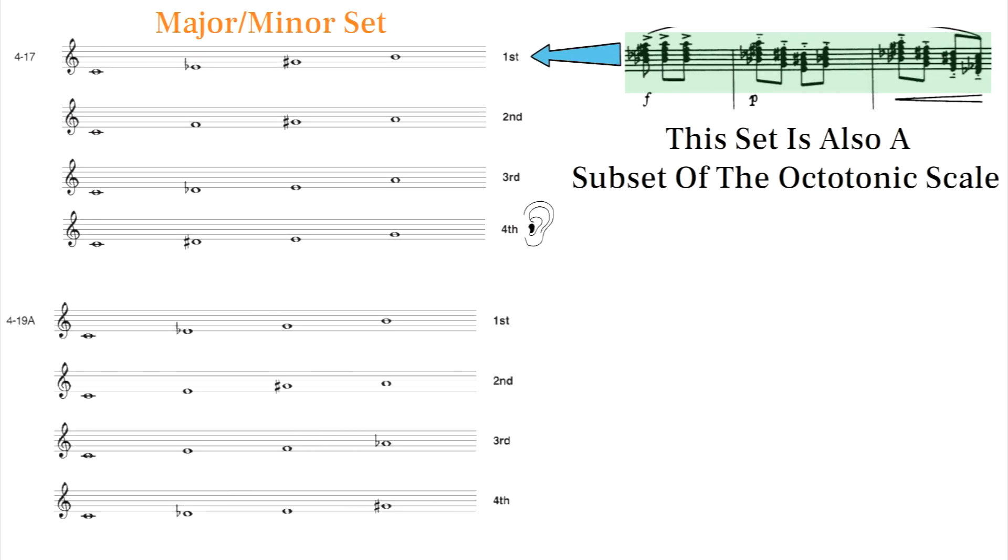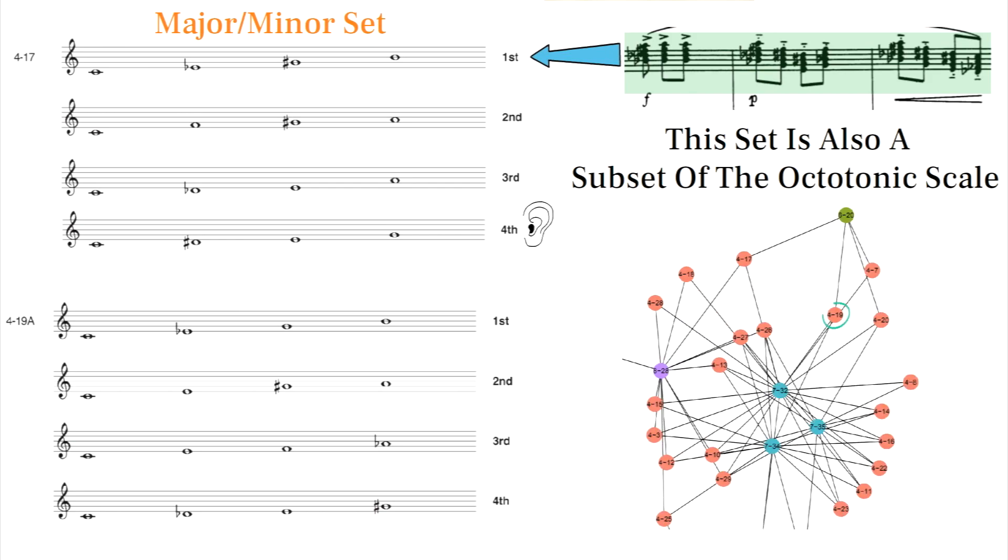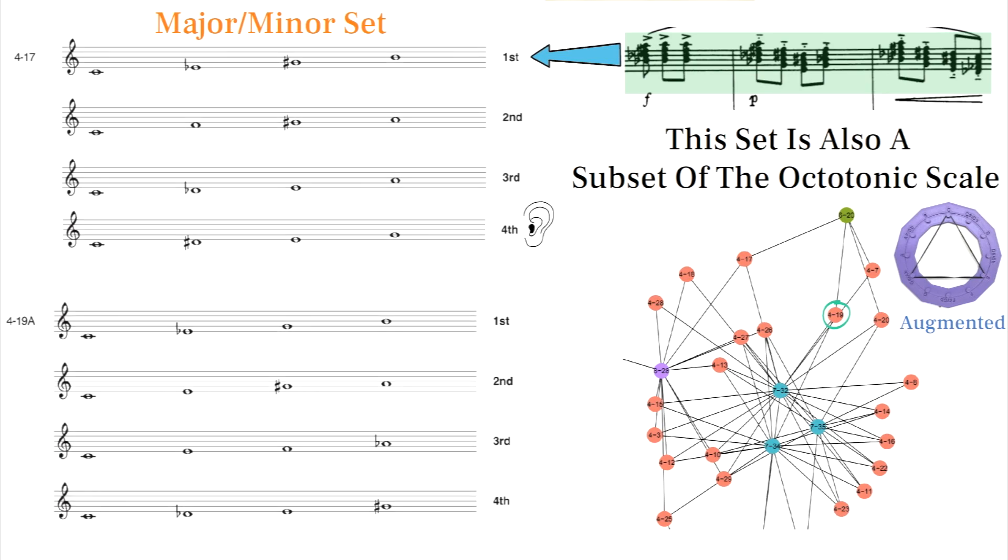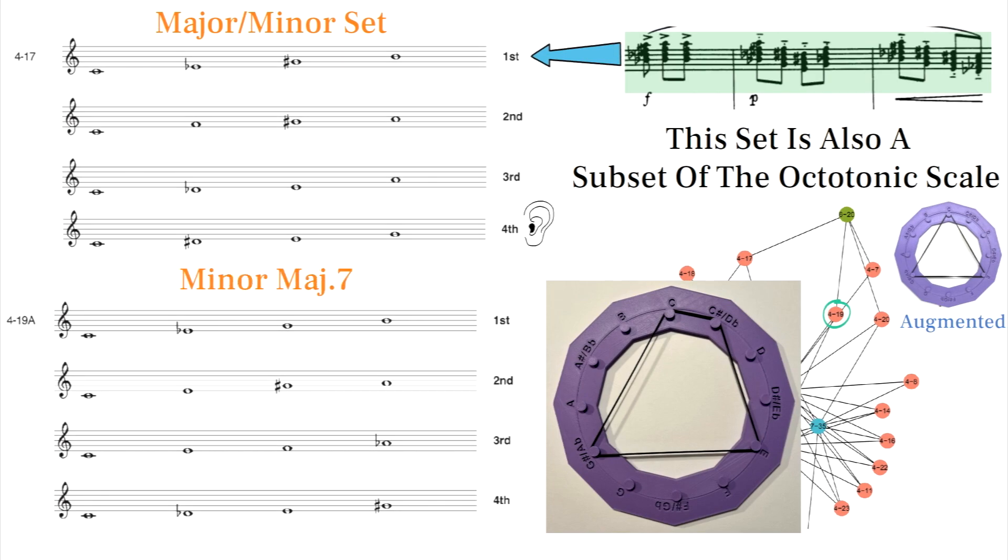Next we have 419 which is a really important chord to learn that's a subset of many pressing scales but not the diatonic set. It's like an augmented chord with an added pitch a half step away from any of the other pitches. When a pitch is added to the right side of the augmented chord, it's 419A which is commonly used as a minor major 7th chord.